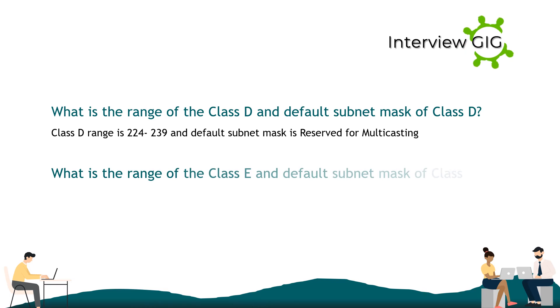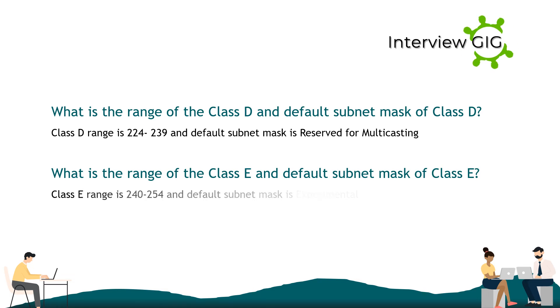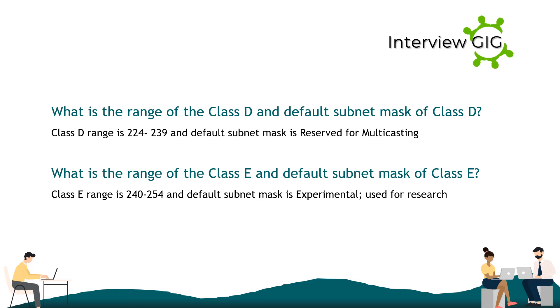What is the range of Class E and its default subnet mask? Class E range is 240–254 and the default subnet mask is experimental, used for research.